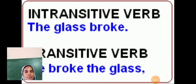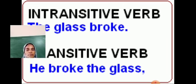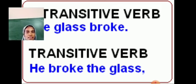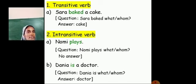You can see some more examples. Intransitive verb: The glass broke. The glass is the subject, broke is the verb, there is no object — so it is an intransitive verb. Transitive verb: He broke the glass. He is the subject, broke is the verb, and we are getting an answer — the glass is the object. Sarah baked a cake. Sarah baked what? Cake — we are getting an answer from the verb, so it is a transitive verb.